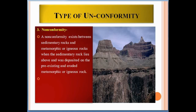The third type is non-conformity. A non-conformity exists between sedimentary rocks and metamorphic or igneous rocks, when the sedimentary rocks lie above and were deposited on pre-existing eroded metamorphic or igneous rocks. Here we can see sedimentary rock above and metamorphic rock below — this unconformity exists between sedimentary and metamorphic or igneous rocks.